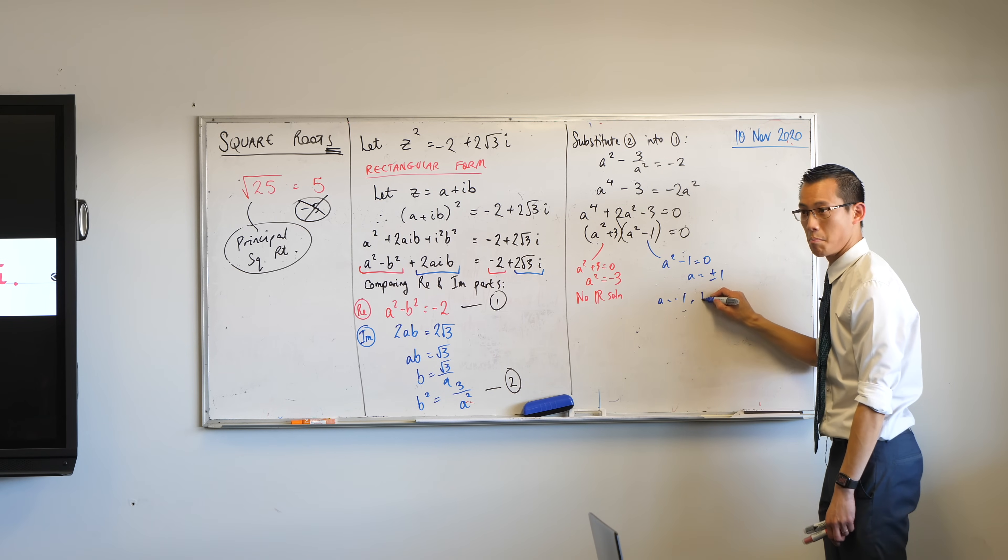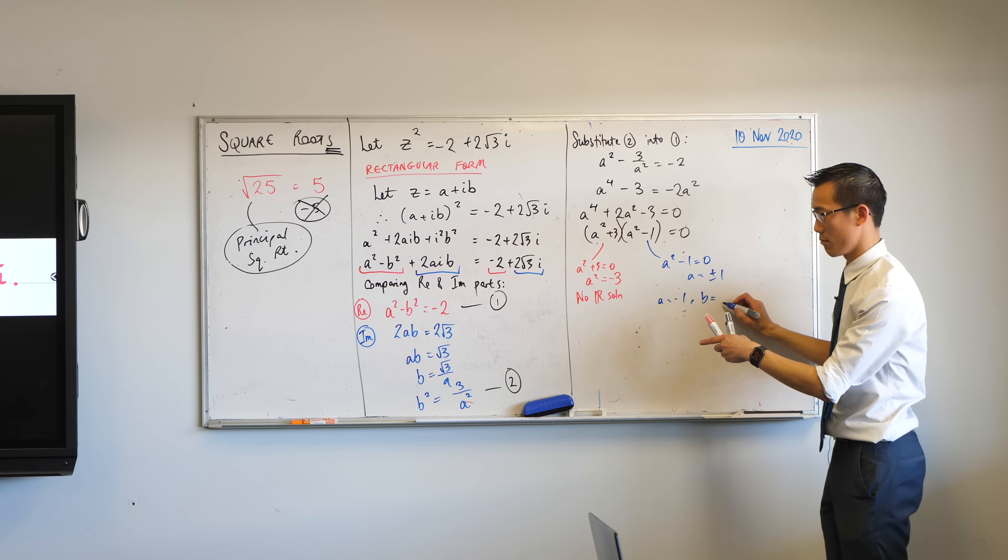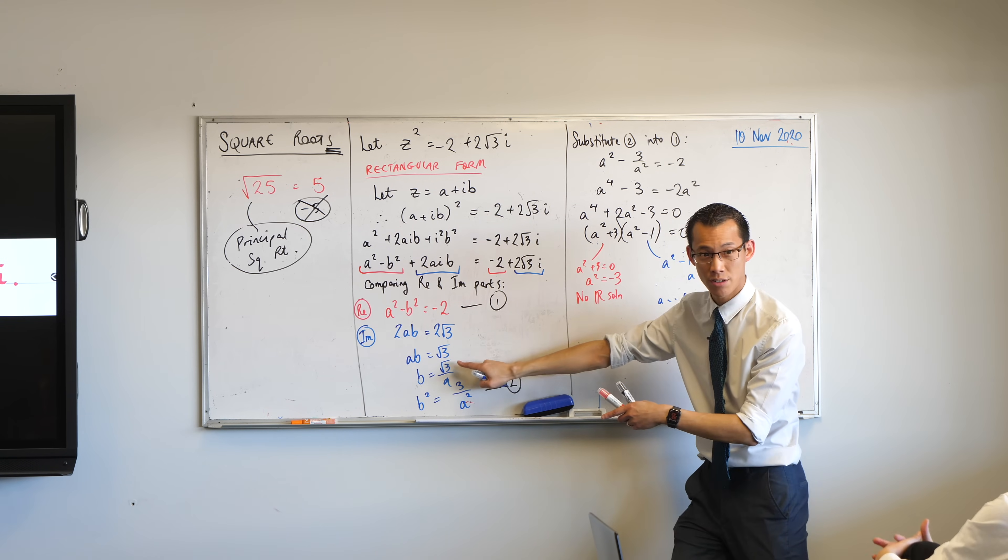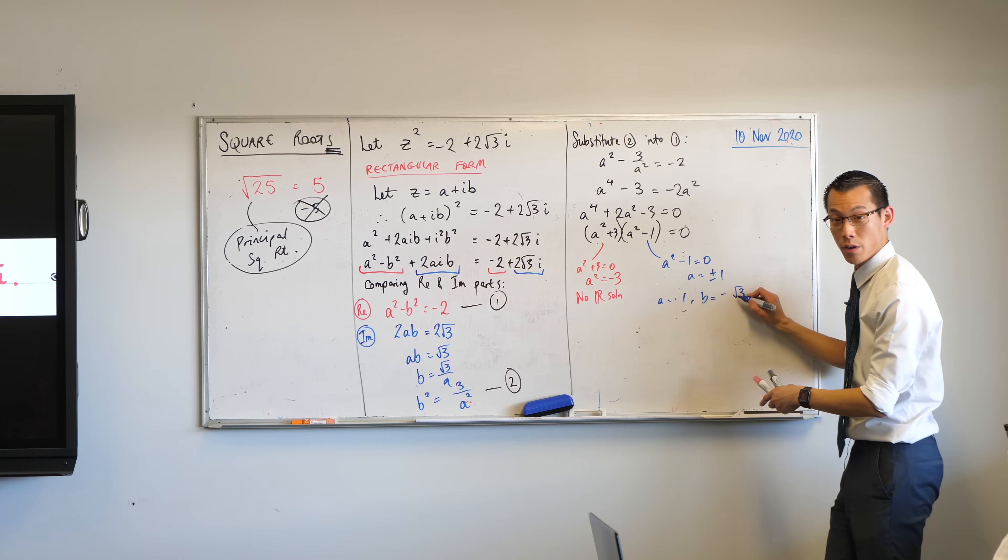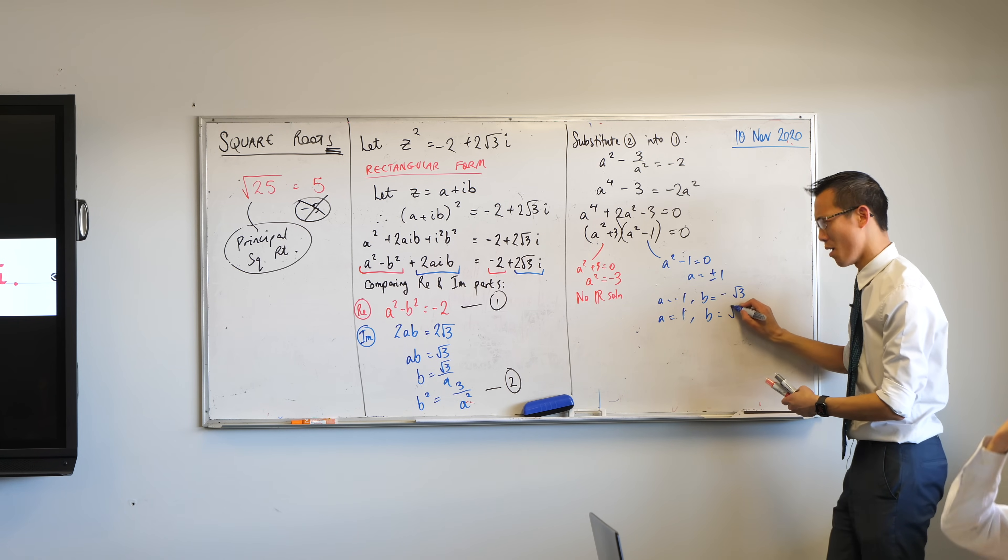When a is negative one, b will equal... Have a look. This is where I'm substituting into. Minus negative root three. Yes? And when a is one, then b is going to be positive root three.